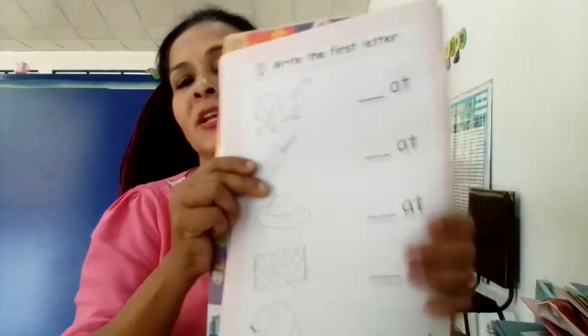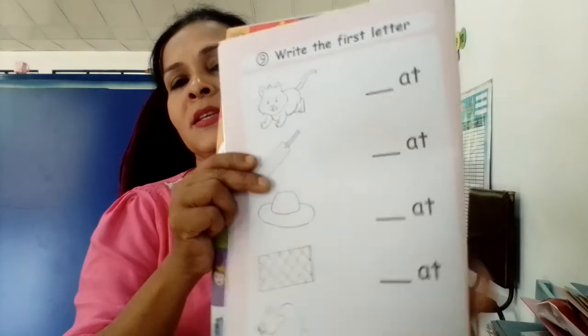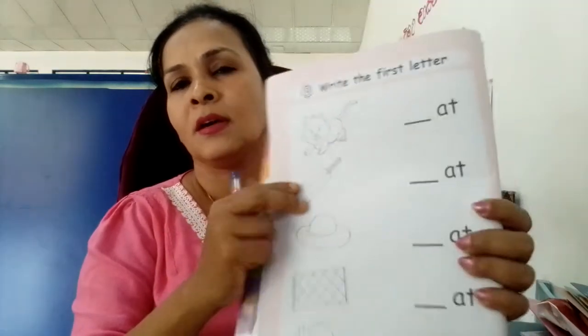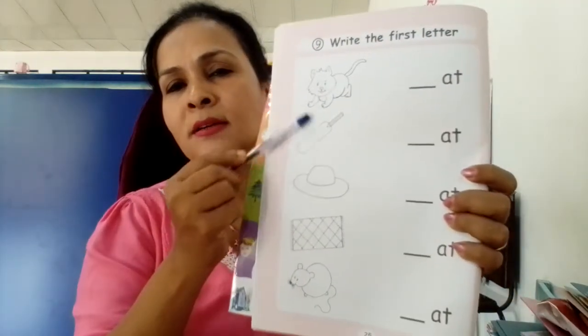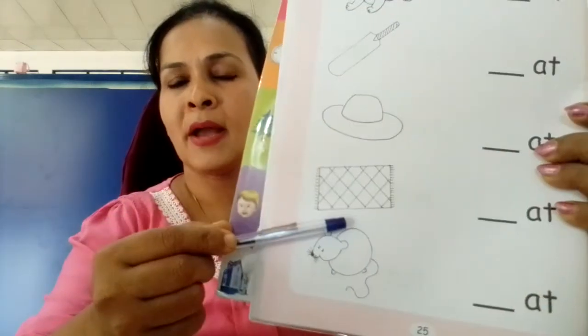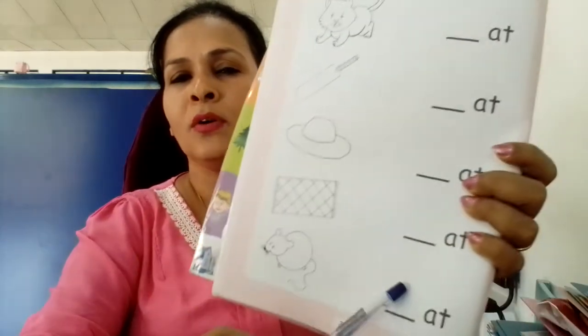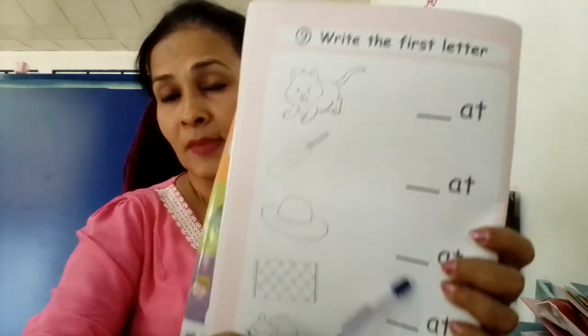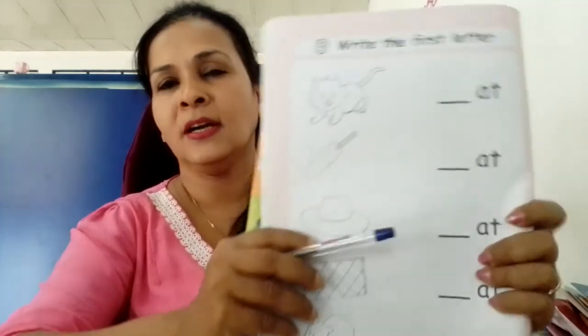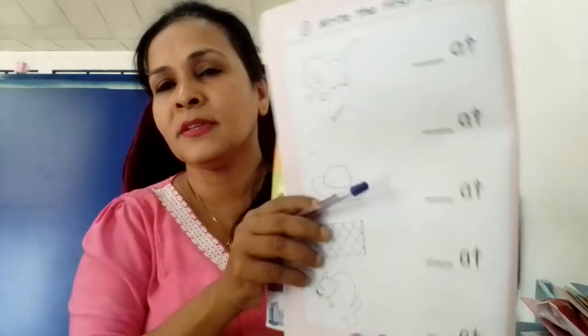Now turn to the next page. You can still see these pictures: cat, bat, hat, mat, rat. Only these words are here. You have to complete the work.